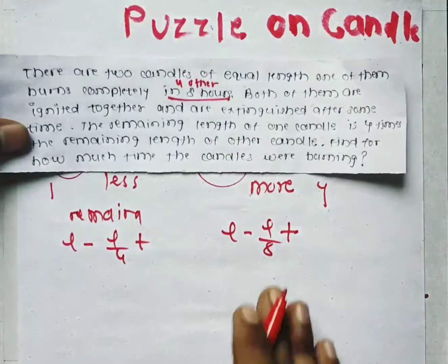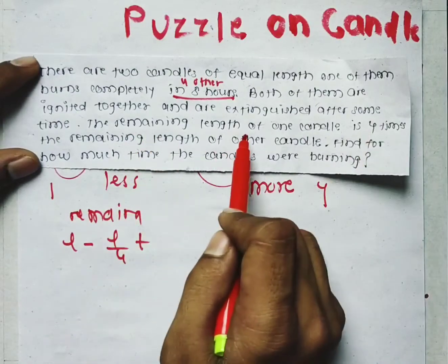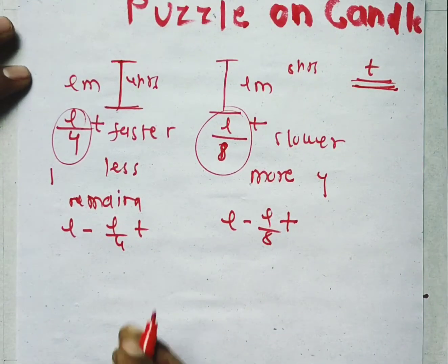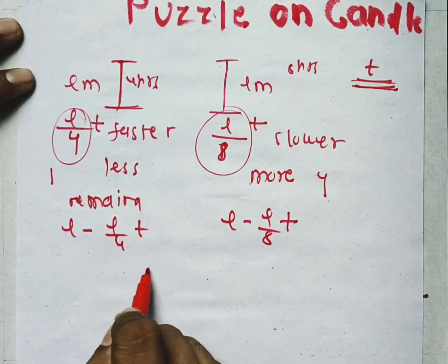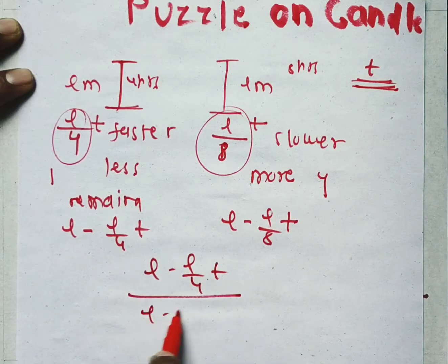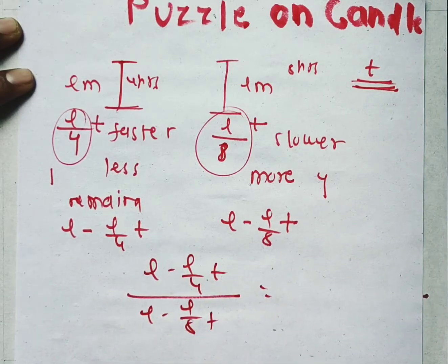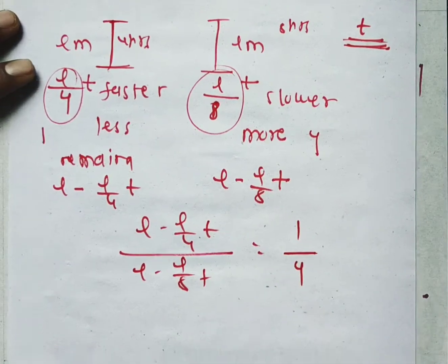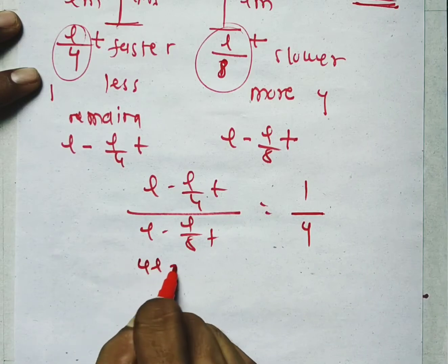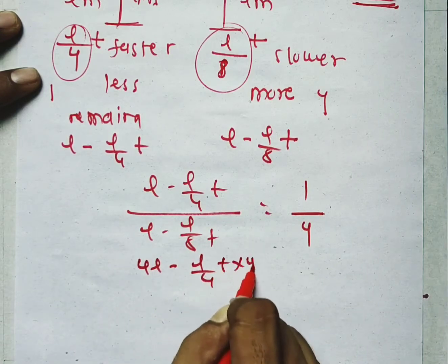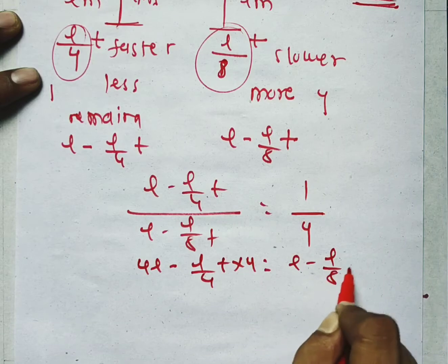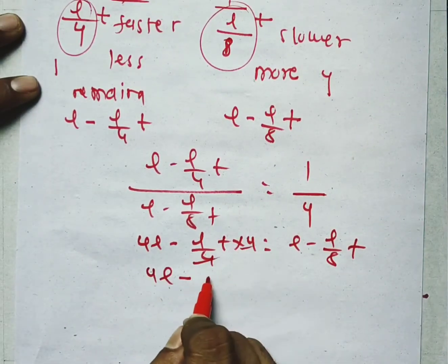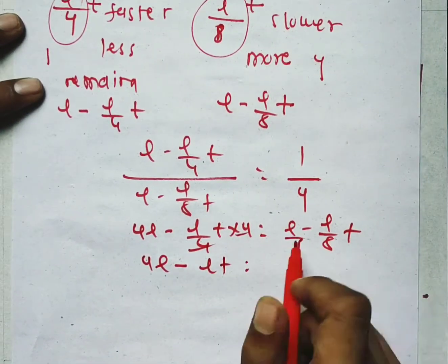The remaining length of one candle is 4 times the remaining length of the other candle. So we set up the ratio: (L − L/8·T) divided by (L − L/4·T) equals 4. Cross-multiplying: 4·(L − L/4·T) equals 1·(L − L/8·T), which gives 4L − L·T equals L − L/8·T.